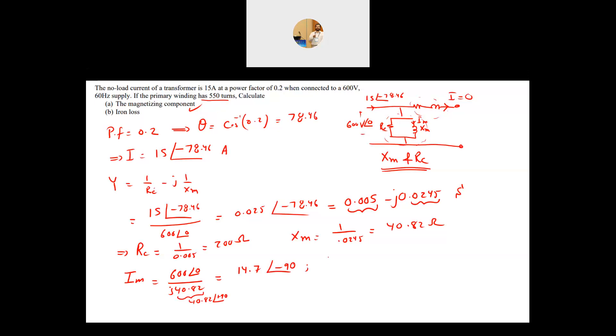And your core loss P_core is equal to the voltage squared divided by RC, which is equal to 600 squared divided by RC which is 200 ohm, and this will give me 1800 watts. So it's a very condensed, very straightforward question if you understand how to approach this question.